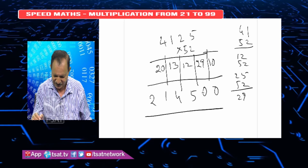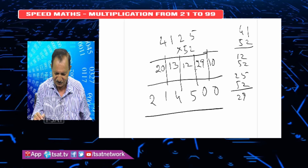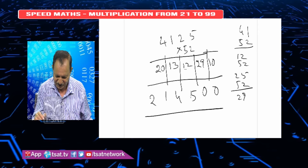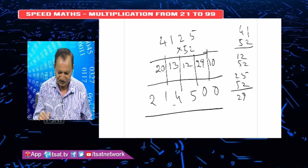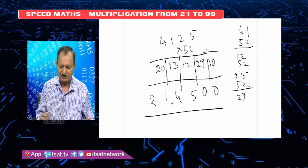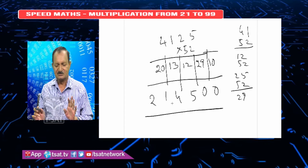1 plus 9 is 10. 3 is 5. Here is 3 is 5, here is 3 is 4. Like this you can do.